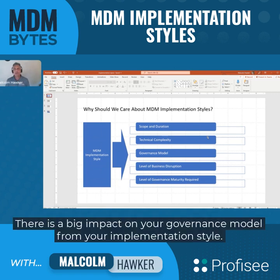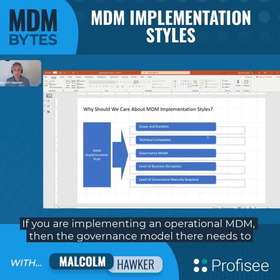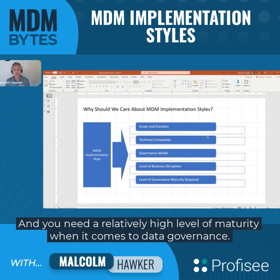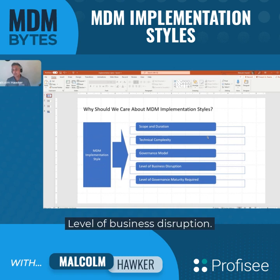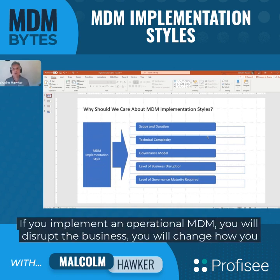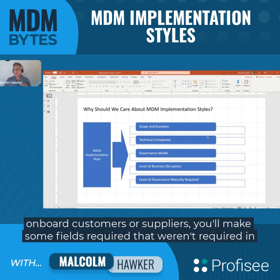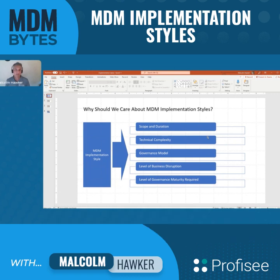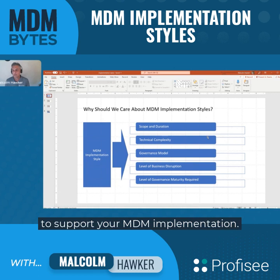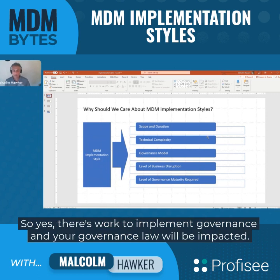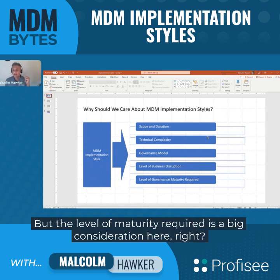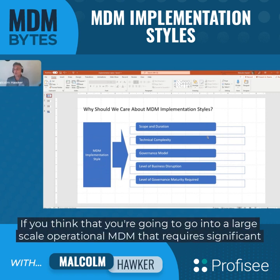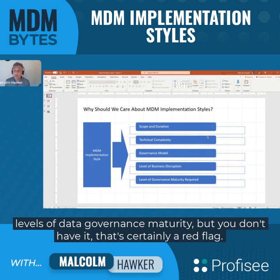Your governance model — there is a big impact on your implementation from your implementation style. If you are implementing an operational MDM, the governance model needs to reflect that, and you need a relatively high level of maturity when it comes to data governance. Level of business disruption: if you implement an operational MDM, you will disrupt the business — you'll change how you onboard customers or suppliers. And lastly, the governance maturity required is a big consideration. If you're going into a large-scale operational MDM that requires significant levels of governance maturity but you don't have it, that's certainly a red flag.